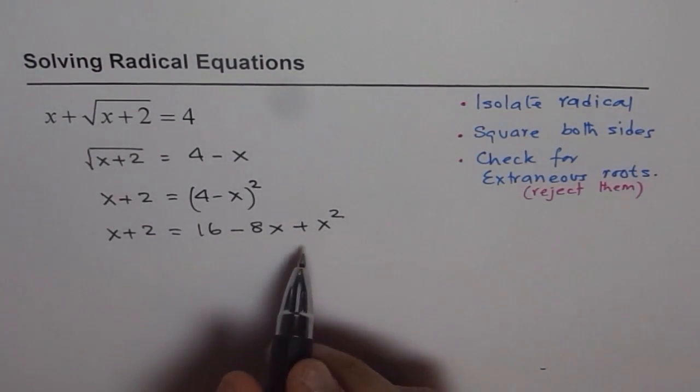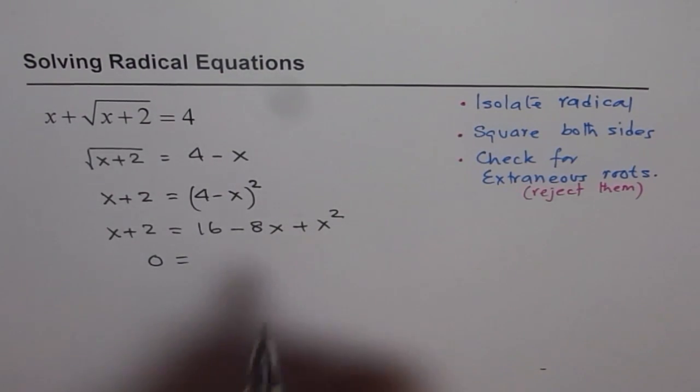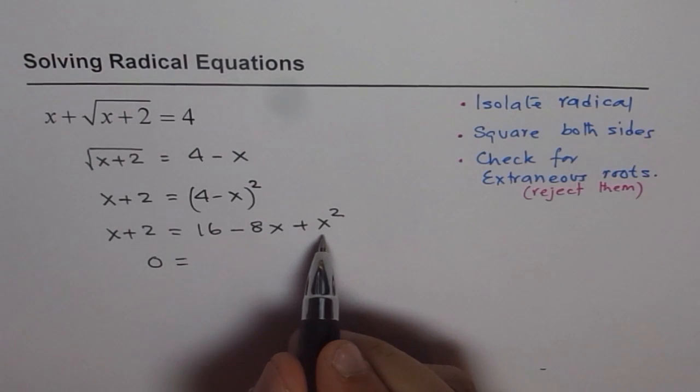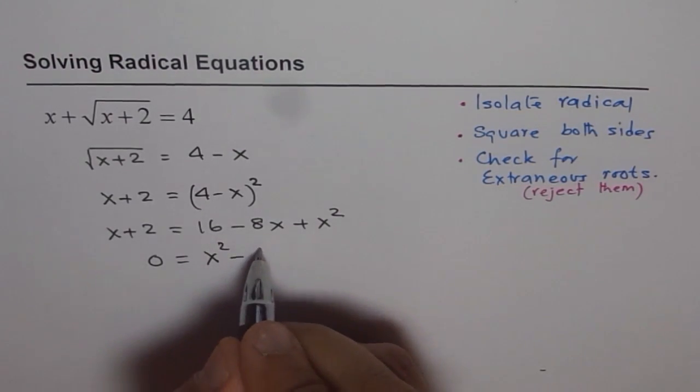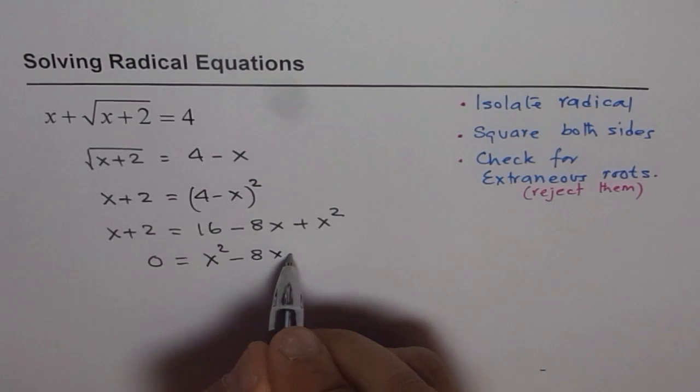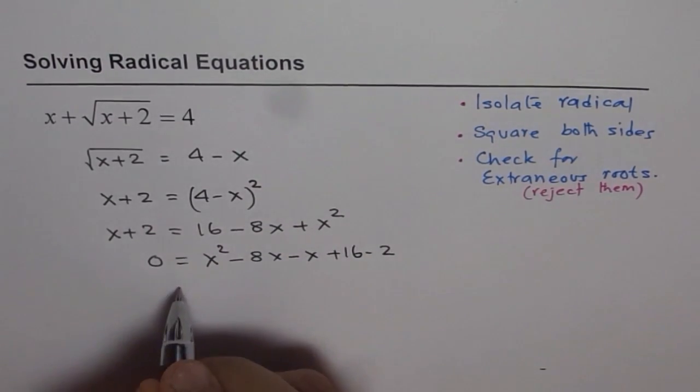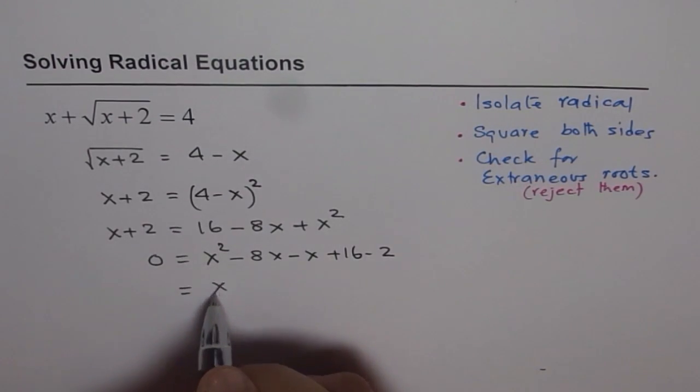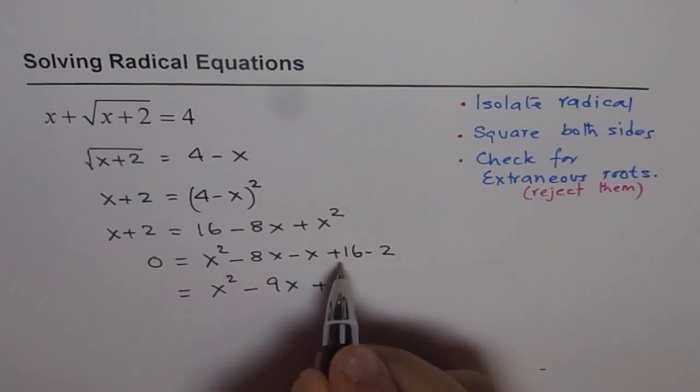Let's bring all the terms together on one side and then solve for x. So, let's bring them to the right side. Rearranging variables with highest degree to lowest. So, we get x square here minus 8x minus x plus 16 minus 2. And that gives us x square minus 9x plus 14.